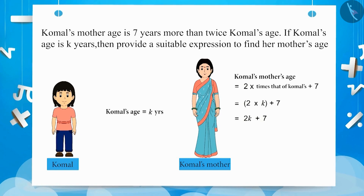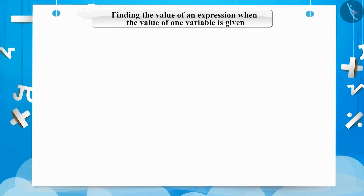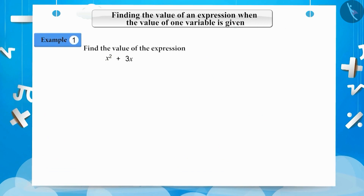Now let us learn how to solve an expression if the value of one variable is given. Let's solve a question to understand this. Find the value of the expression x squared plus 3x minus 14, if x is equal to 3.